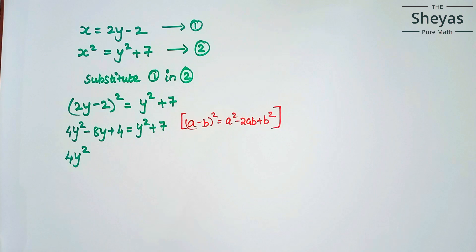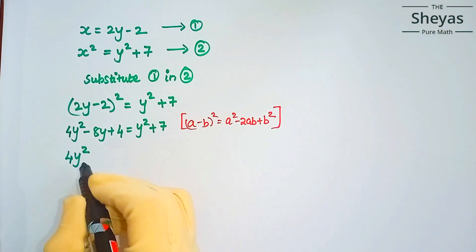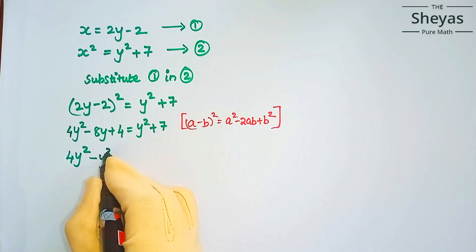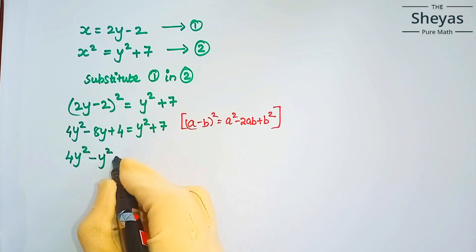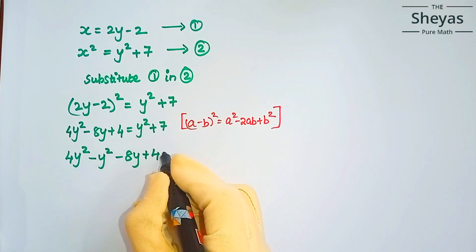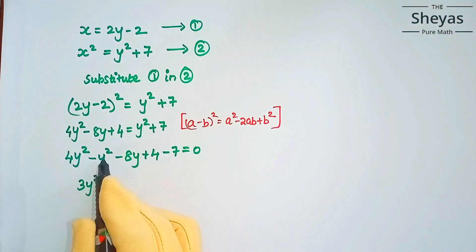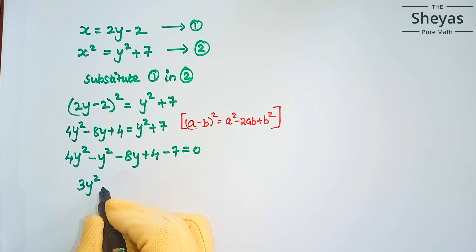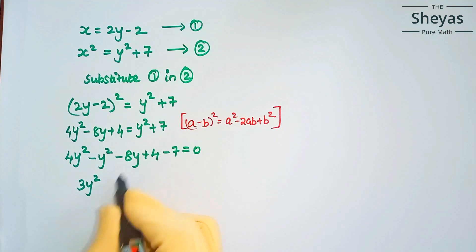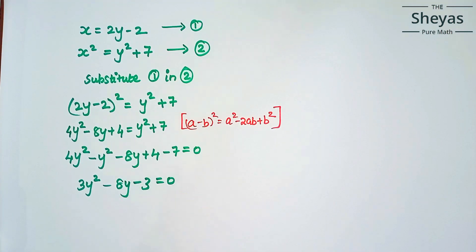Rearranging: bring y² to the left side. We get 4y² − y² − 8y + 4 − 7 = 0, which simplifies to 3y² − 8y − 3 = 0. Now we apply factorization to solve this quadratic equation.